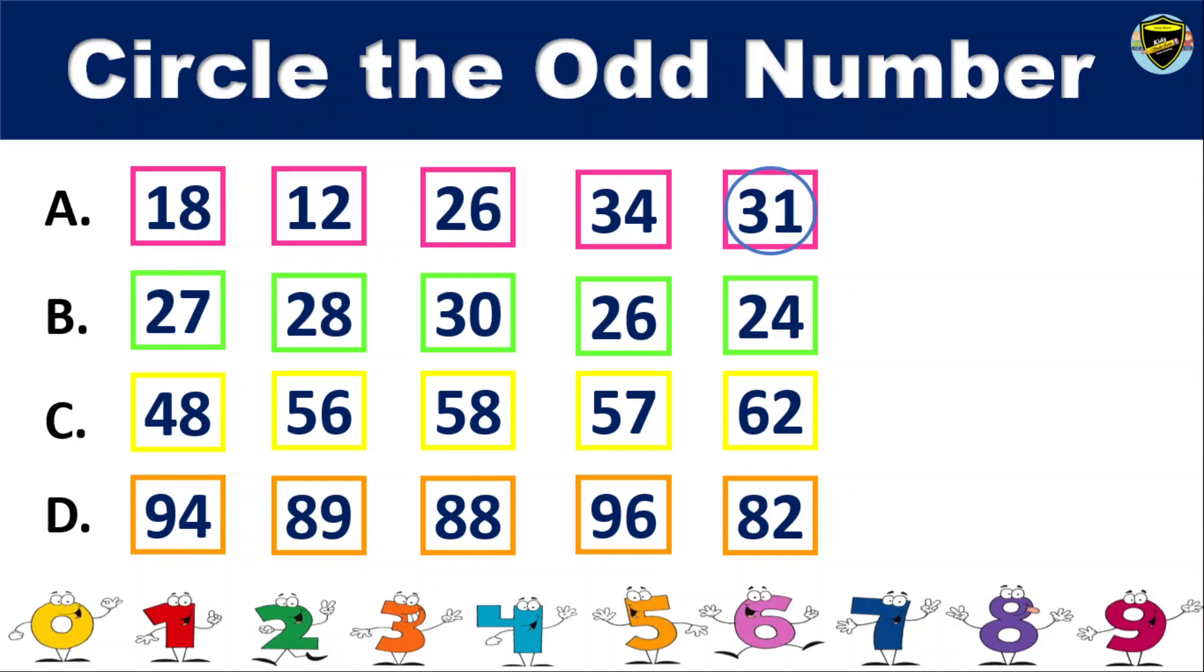B. 27, 28, 30, 26, 24. Find out the odd number. The answer is 27.